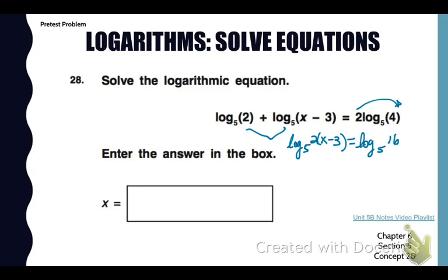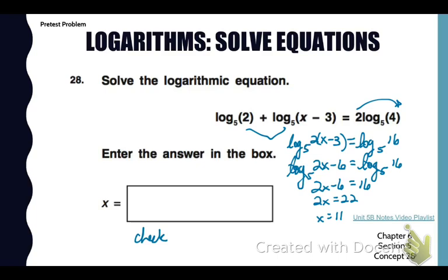Now I can use my method 1 of solving property of equality. I can just set my log values equal to each other because I have two log base 5s equaling. So I'll say 2x minus 6 equals 16. Solving for x, I get 11, but I'm going to check it.